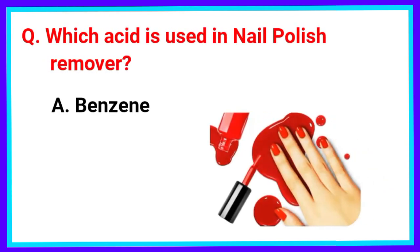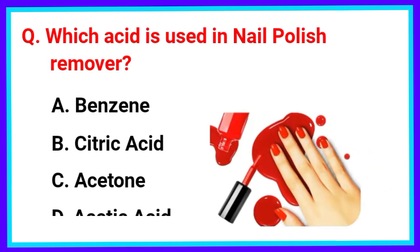Which acid is used in nail polish remover? The correct answer is Option C. Acetone.